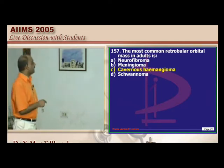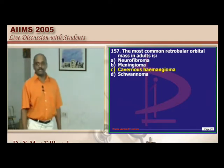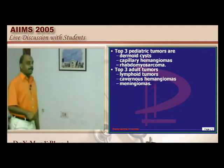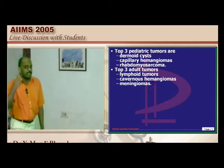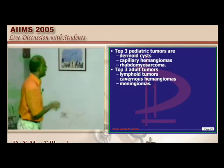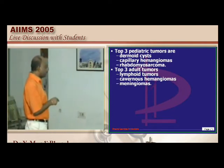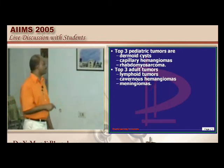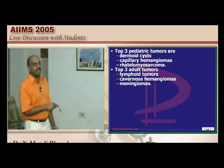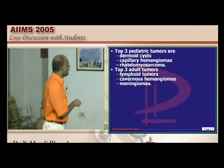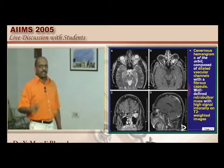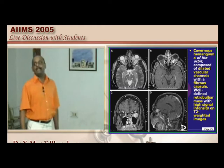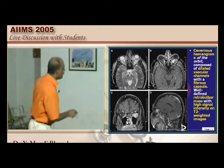The most common retroorbital mass in adults is a favorite exam question. Orbital masses seen by ophthalmologists in pediatric patients include dermoid cyst, capillary hemangioma, and rhabdomyosarcoma. In adults, lymphoid tumor, meningioma, and cavernous hemangioma are seen. Importantly, cavernous hemangioma is seen in adults and capillary hemangioma in the pediatric age group.